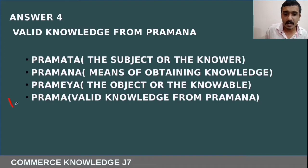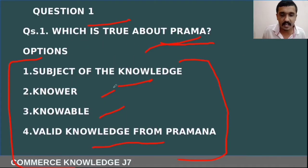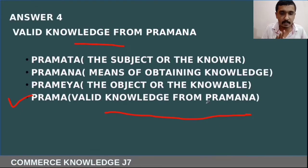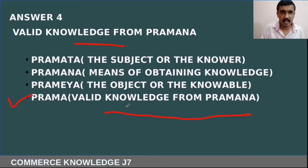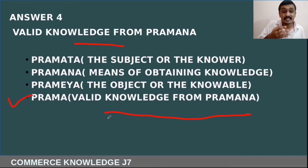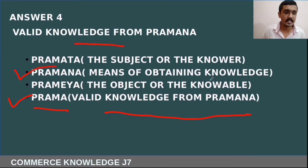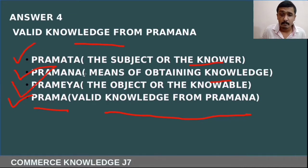Prama means valid knowledge from pramana — the fourth option is the right answer. We know about several kinds of pramana such as anumana, upamarana, and others; the valid knowledge obtained from these pramanas is called prama. Pramana means the means of obtaining knowledge, pramatha means the subject or knower, and prameya means the object or the known.